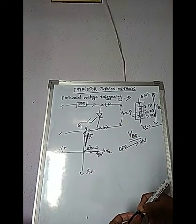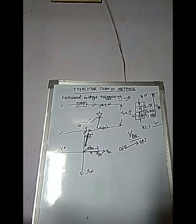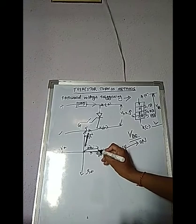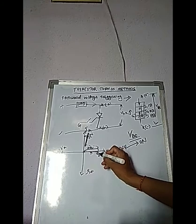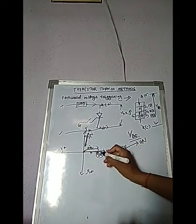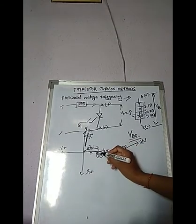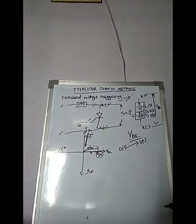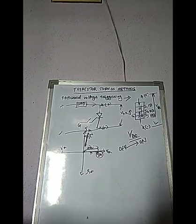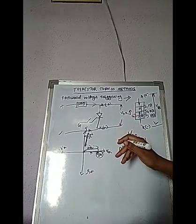Transition from off state to on state is obtained by exceeding VBO. However, this method of triggering is never employed because at the point of breakdown, the voltage is also high and current rises rapidly. Since both voltage and current are at higher levels simultaneously, it may destroy the device during conduction.